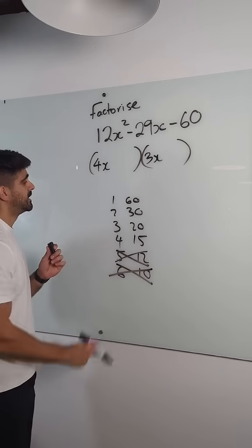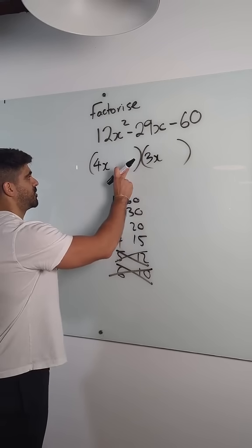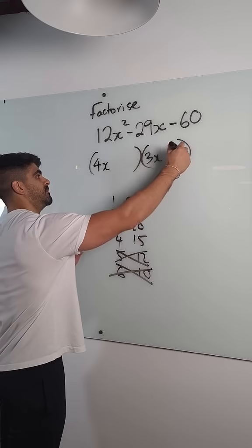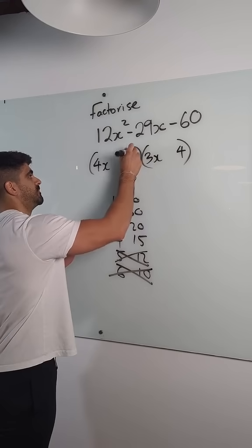Let's try 4 and 15. If this is going to work, the 4 cannot go here. It's going to have to go here. 15 would have to go here.